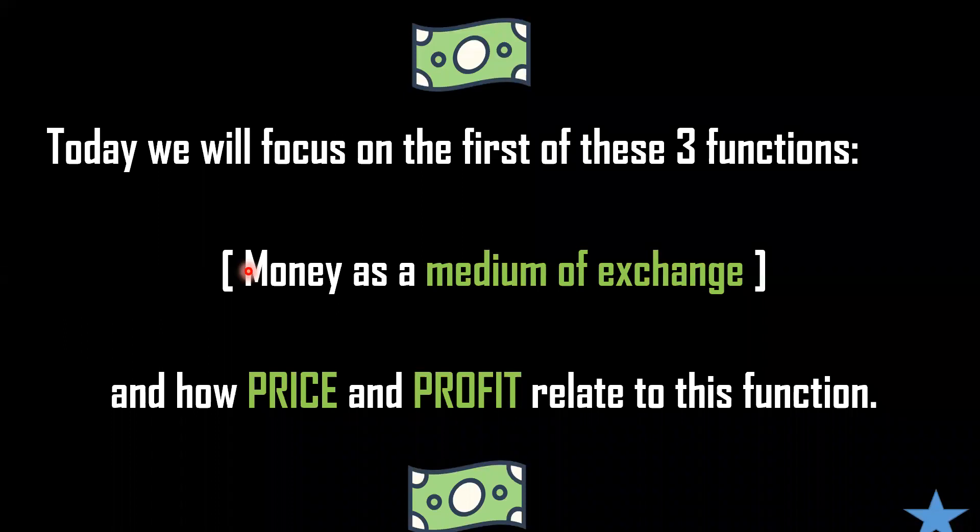As you have seen, the three functions are very different from one another. But today we will focus on the first of these three functions — money as a medium of exchange — and we're going to explore how price and profit relate to this function.